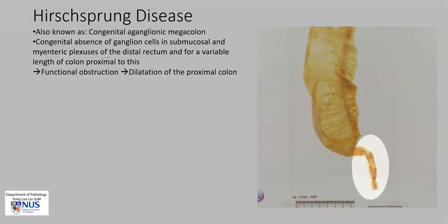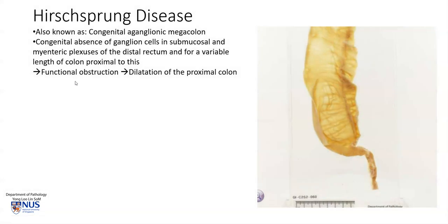The affected area is usually very atrophic and shrunken-looking with a very small diameter, and this gives rise to a functional obstruction and therefore dilatation of the proximal colon. In this picture, we can see that this is the aganglionic segment, and this is the normally innervated dilated proximal colon.